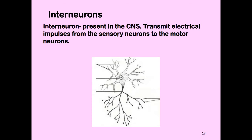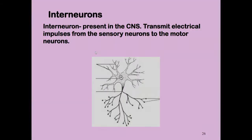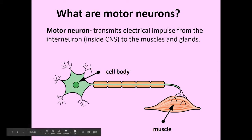Interneurons are present in the central nervous system. They transmit the electrical impulses from the sensory neurons back to motor neurons or up towards the brain. The motor neurons transmit electrical impulses from the interneurons — so inside the central nervous system — to the muscles and glands. If you want your pancreas to make a particular hormone, your brain will send out a signal through the interneurons and then to the motor neurons, and the motor neuron will attach to that gland and signal it to produce hormones.